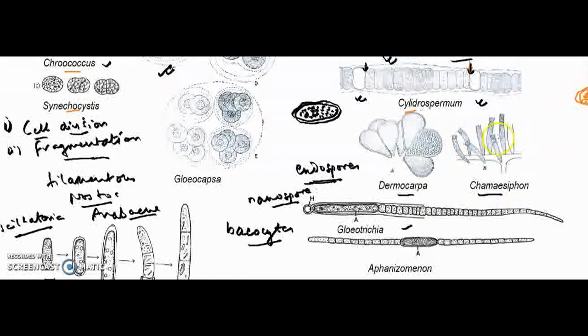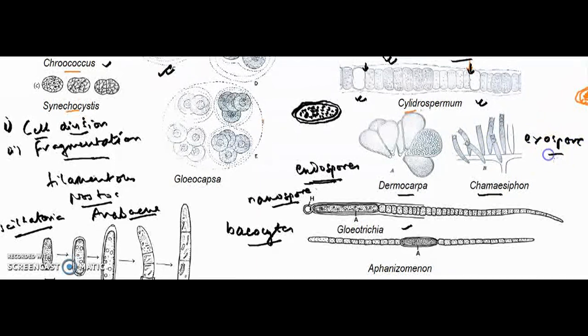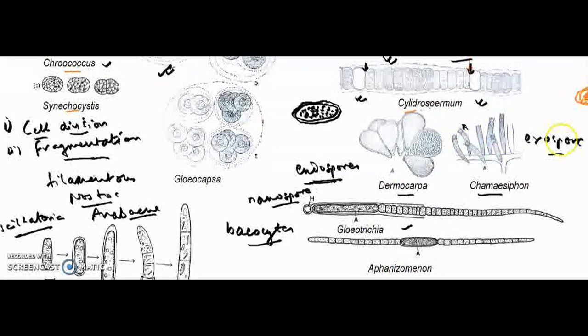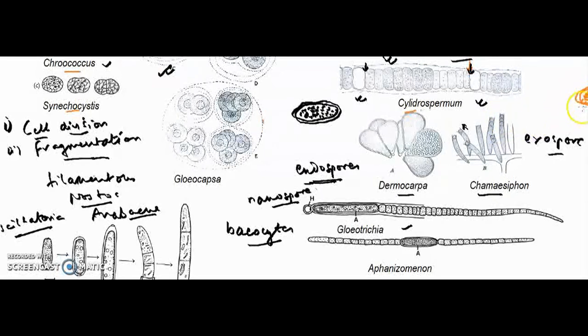Chamaesiphon exhibits another reproductive structure called exospores, because they are formed outside. They are budded out from the protoplasm and release smaller cells. These units are exospores that germinate into a new filament.